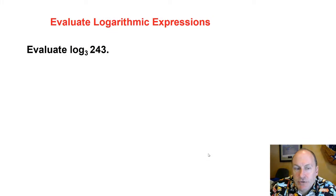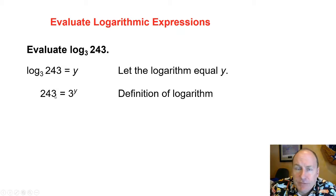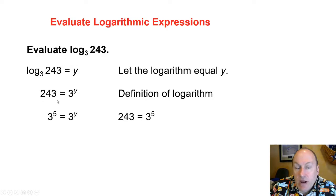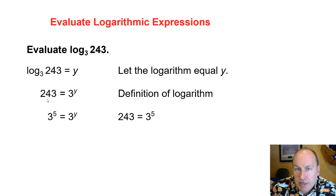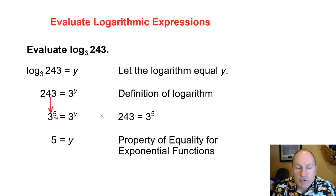Let's evaluate log base 3 of 243. We let log base 3 of 243 equal some unknown y, and rewrite it in exponential form: 243 equals 3 to the y. Now 243 and 3 are not the same base, but we can express both in base 3. Since 243 equals 3 to the 5th power, we use the equality property: 3 to the 5th equals 3 to the y, therefore y equals 5.